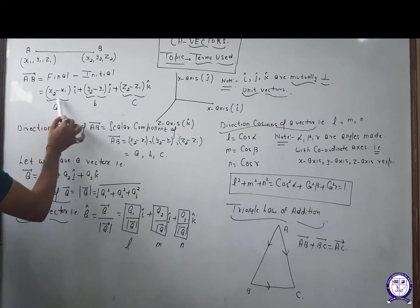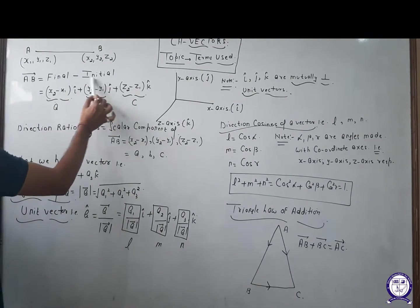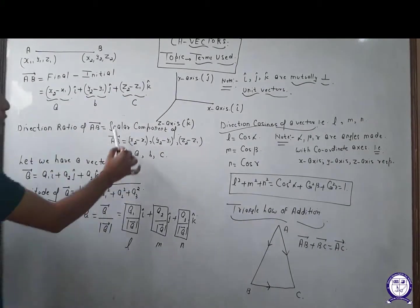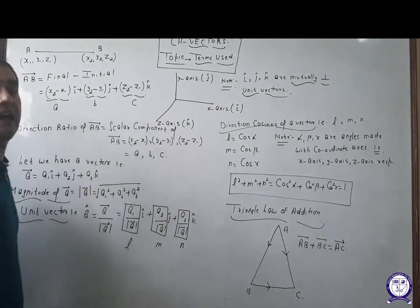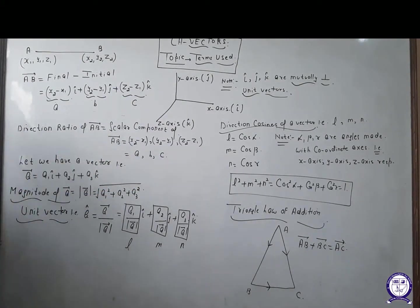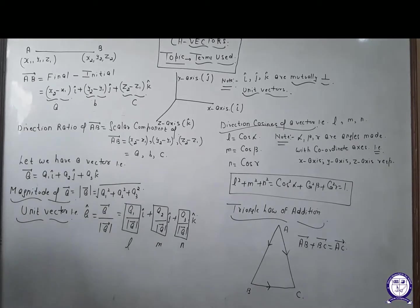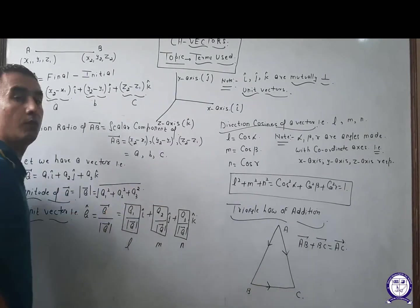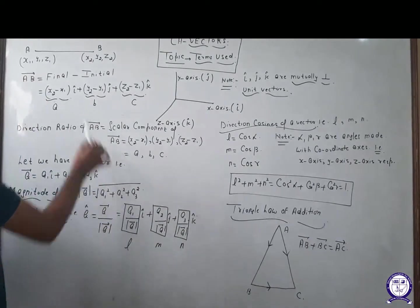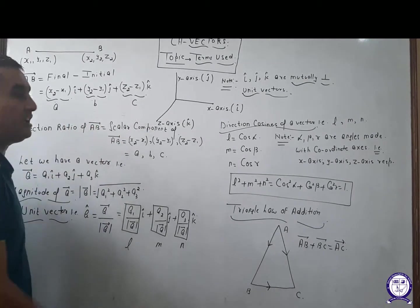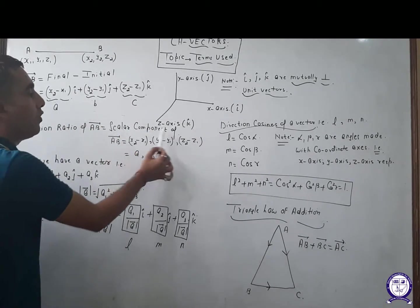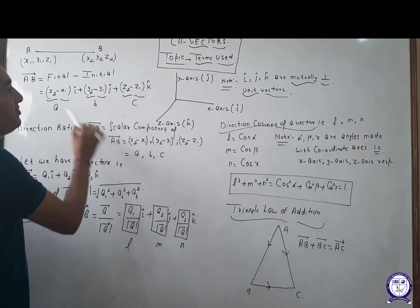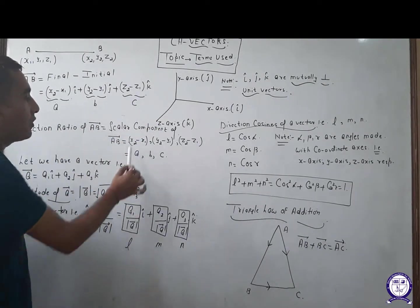These scalar components of a vector are known as the direction ratios of that vector, represented by small a, small b, and small c. Without i, without j, without k, they are called scalar components of a vector. With i-cap, with j-cap, and with k-cap, they are called vector components of a vector.